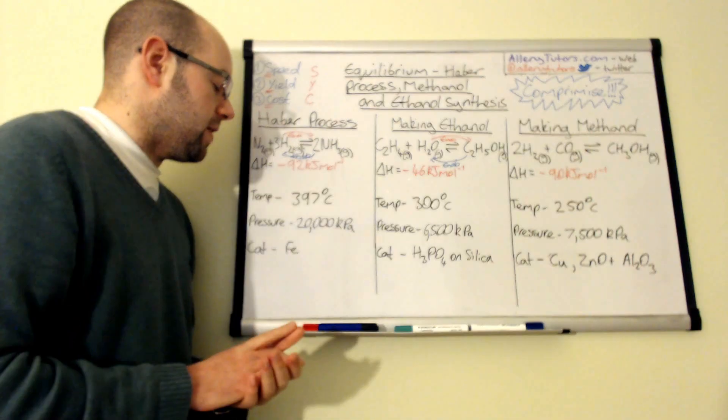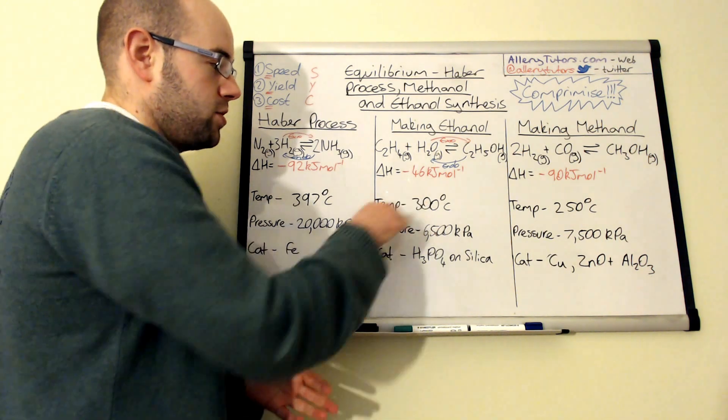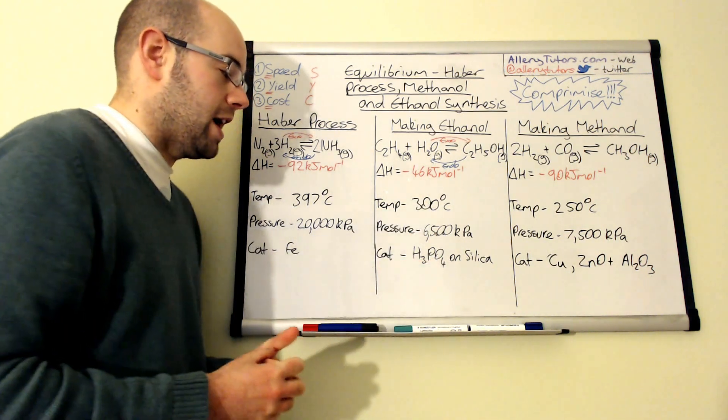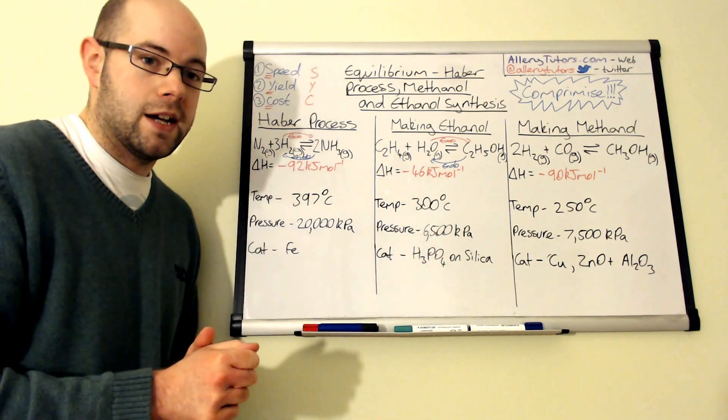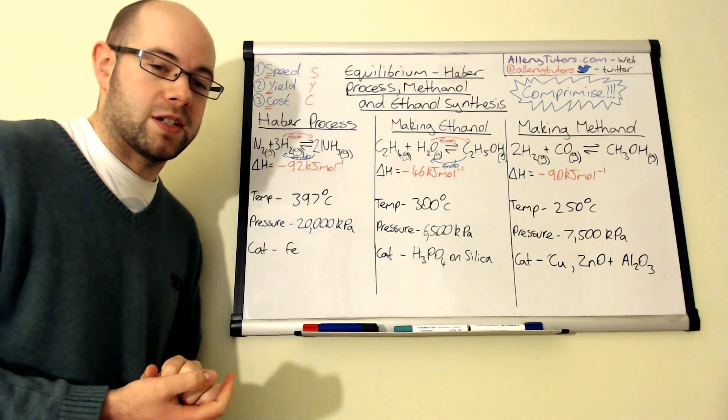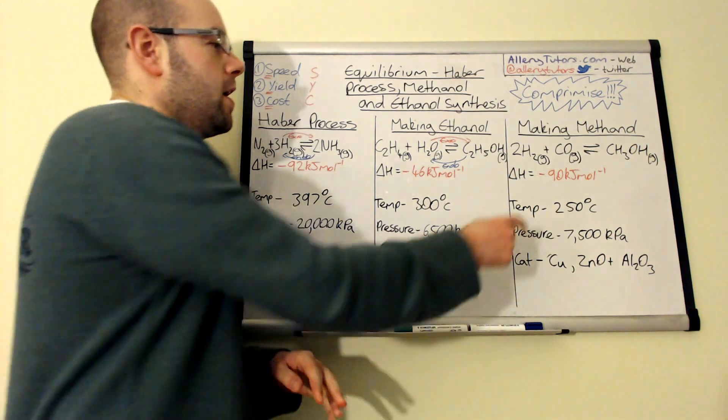A compromise has to be made. Just like the Haber process, to help speed up the rate of reaction because the temperature is relatively low, we can introduce a catalyst. This catalyst is phosphoric acid on silica, and this will help to speed up the rate at which equilibrium is established and save a bit of money for the company as well.